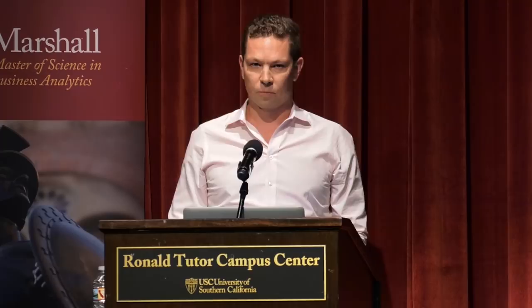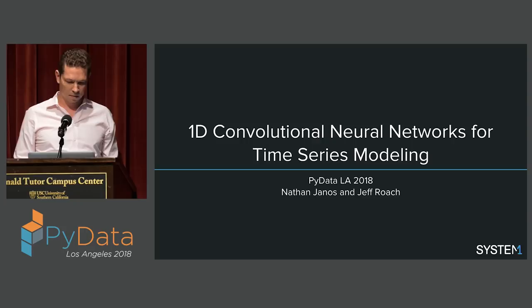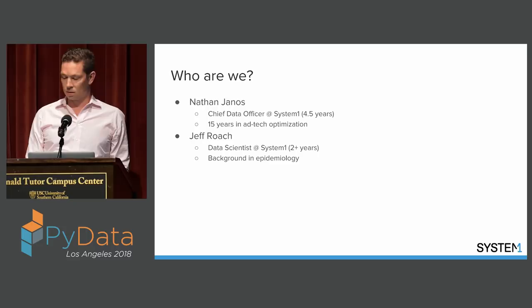Thanks for the intro, Neil. Neil actually built some of our data science foundation, our modeling architecture, so big thanks to him that we use. We're going to do a two-part talk here. I'm going to do the first part on the motivation and the prototyping, and Jeff's going to come up and talk about the productionization and how we used it and how he built out an API for us with it. I'm Nathan Janos, Chief Data Officer at System 1. I've done a lot of ad tech, and Jeff is a data scientist with a background in epidemiology.